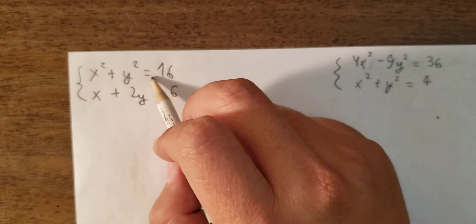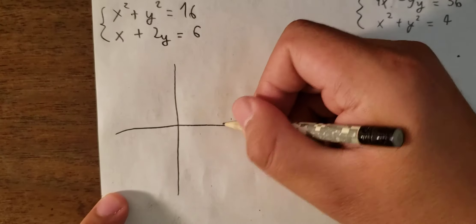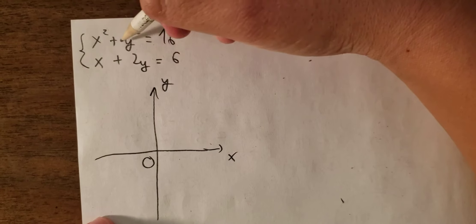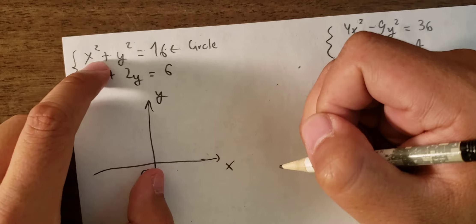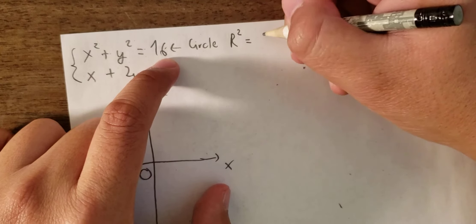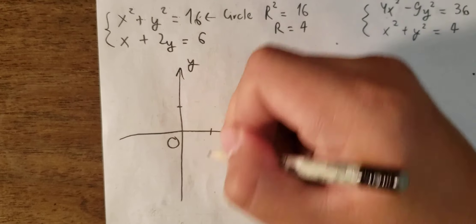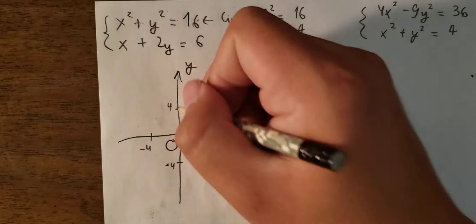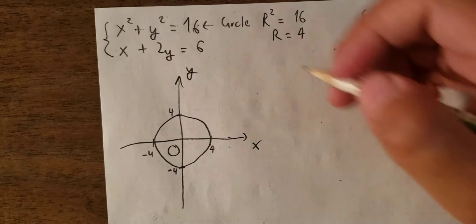And x plus 2y equal to 6. So we draw them here. We can see that x squared plus y squared equal to 16 is about the circle. The center of the circle is at (0, 0), and 16 is r squared equal to 16, so r equals 4. That's why we draw the circle with points at 4, negative 4 on both axes.